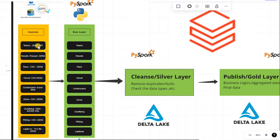The first source is API — we will be fetching the teams data in JSON format, since in a competition we have different kinds of teams. Then we have result data in Parquet format, which is present in the Gen2 data lake layer. We also have race data in CSV format present in Gen2, and circuit data — the path where the race happens — also in CSV format in the Gen2 layer.